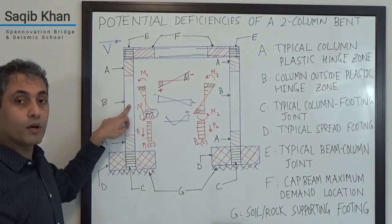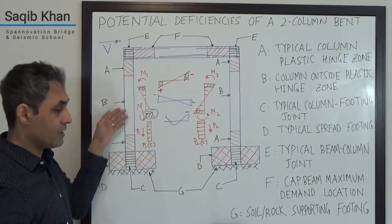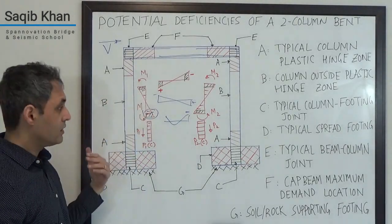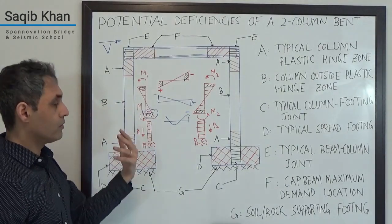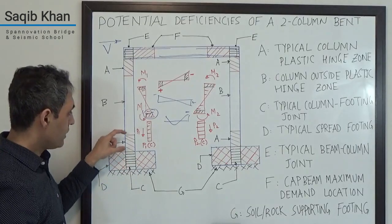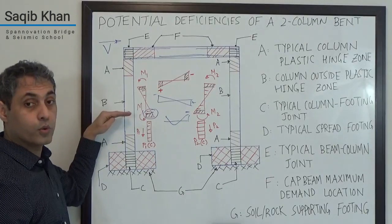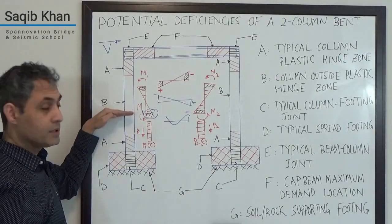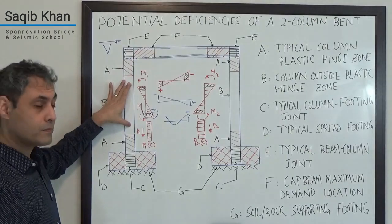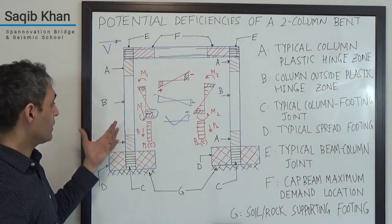Outside of the plastic hinge zones, we want to make sure that the columns do not have overly aggressive rebar curtailment. We have to think about and look at the demand envelopes. We have to think about what we call tension shift effects when the plastic hinge forms and make sure that we do not curtail rebar unnecessarily and too quickly because then we can have plastic hinge migration.